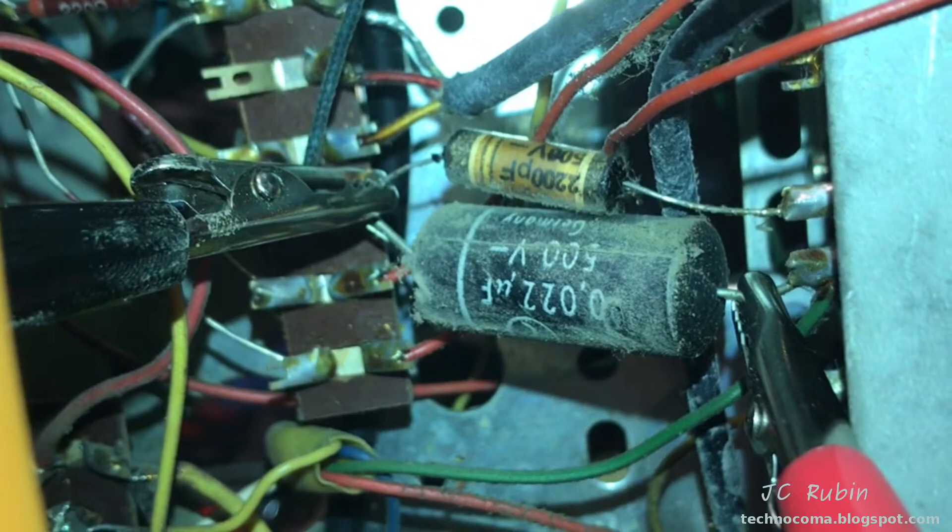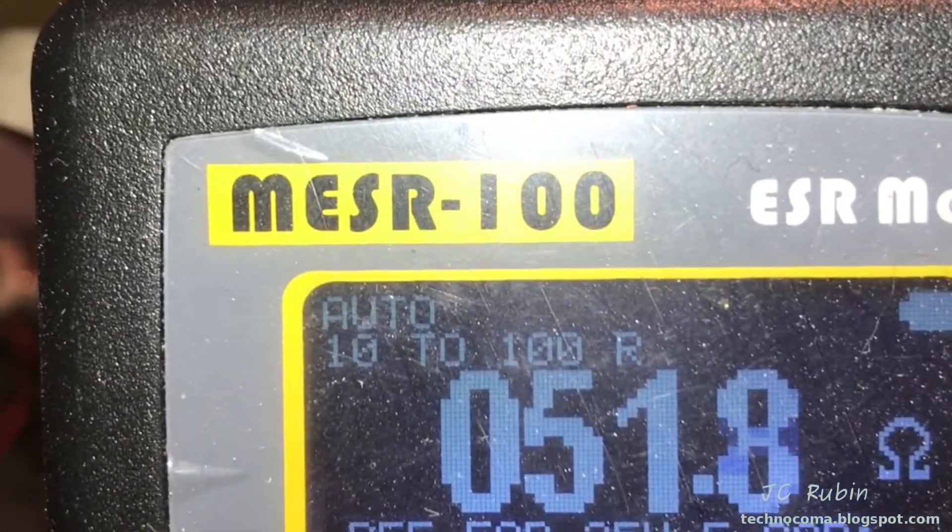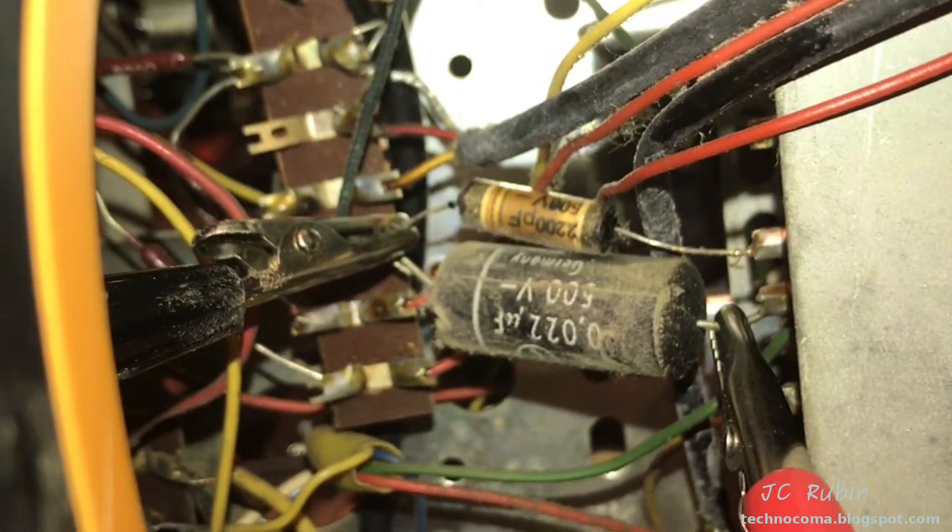I found a third plastic coated capacitor here. This is a 0.022 rated at 500 volts showing ESR at 51 ohms. This is quite incredible. This one will have to come out too.